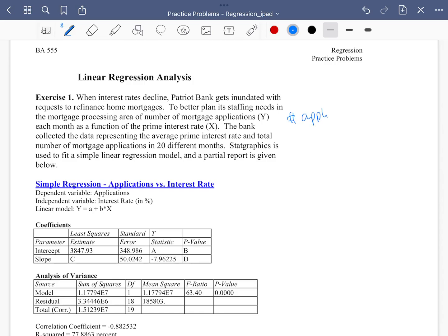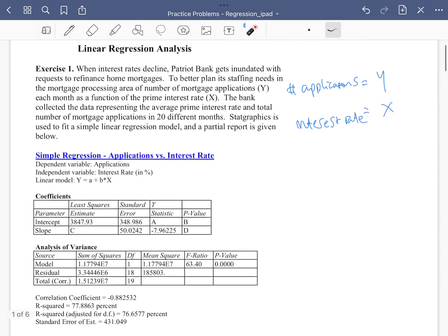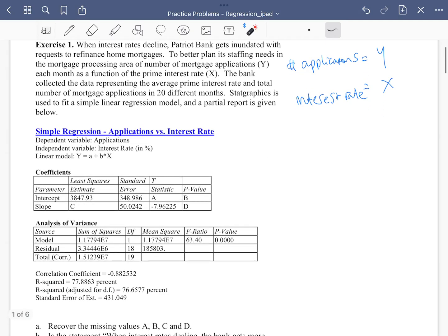So they try to use prime interest rate to explain the bank's number of applications. Number of applications is our Y and X is the interest rate. They collected data of 20 different months. The software used here is Stat Graphics. Regardless of the software you use, the output should be somewhat identical.